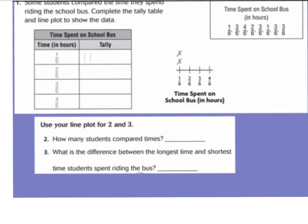Now we're going to look at how we could make a line plot, and we're going to use a tally chart as well. Some students compared the time they spend riding the school bus. Complete the tally table and the line plot to show the data. This is the time spent on the school bus in hours, and it's in fraction form. Each one represents one student's time on the school bus. We have a tally chart, and we're going to make sure our fractions are in order from least to greatest.